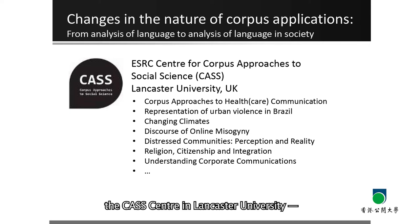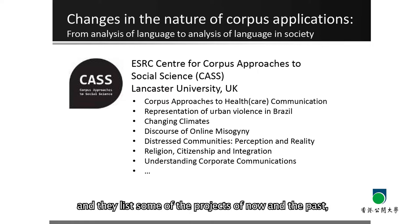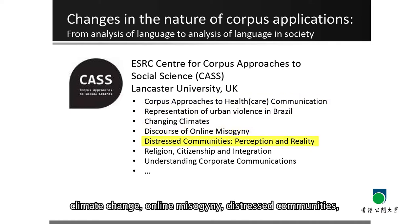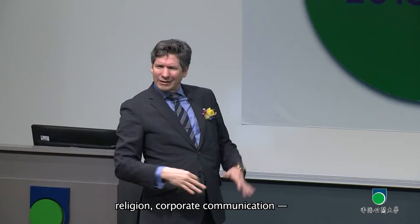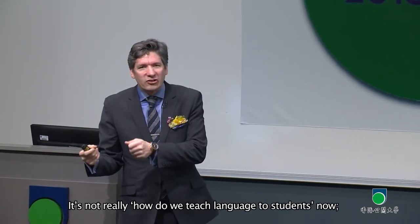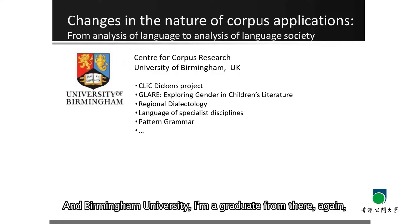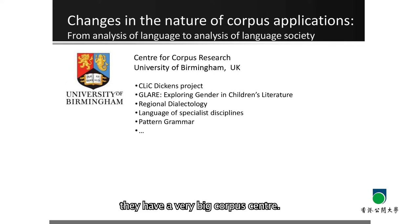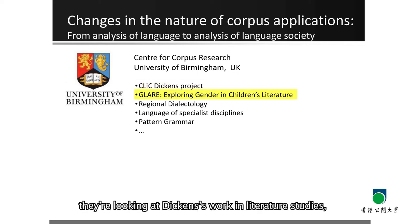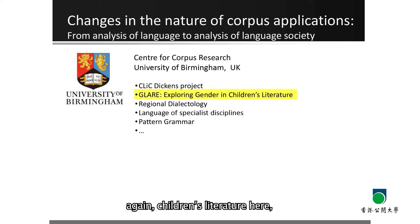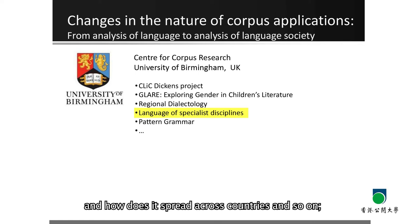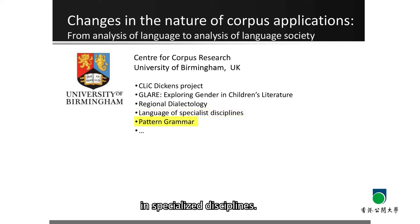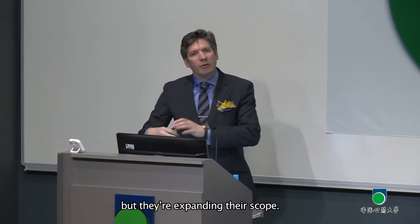A couple of good examples are the CASS Centre at Lancaster University — Corpus Approaches to Social Science. If you look at their website, they list projects covering healthcare, urban violence in Brazil, climate change, online misogyny, distressed communities, religion, corporate communication. It's kind of broad — it's not really about how we teach language to students anymore; it's more of this social idea. And at Birmingham University, they have a very big corpus centre. They're looking at Dickens' work in literature, children's literature, dialectology, how language emerges in culture and society, how it spreads across countries, as well as things like grammar and language in specialized disciplines. They're not losing the original point, but they're expanding their scope.